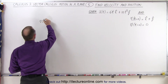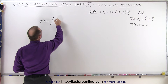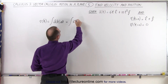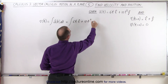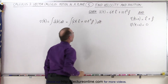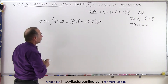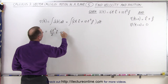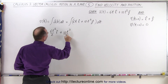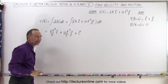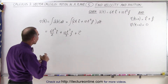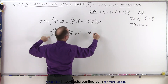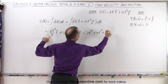The velocity as a function of time is going to be the integral of the acceleration as a function of time dt. We're given the equation, so this is equal to the integral of 6t in the i direction plus 12t squared in the j direction, times dt. You could separate those two integrals or do them together. This gives us 6t squared over 2 in the i direction plus 12t cubed over 3 in the j direction, plus a constant of integration vector. Simplifying: 3t squared plus 4t cubed plus a constant of integration.